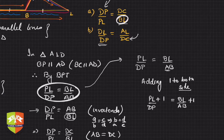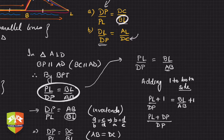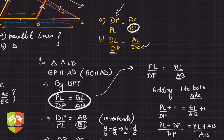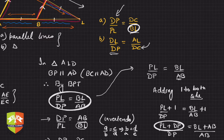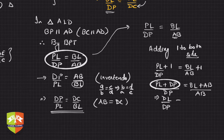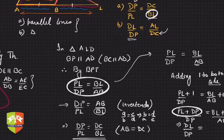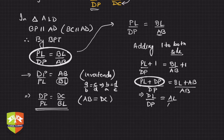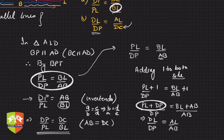Taking the common denominator on both sides: the left side becomes (PL + DP) upon DP, and the right side becomes (BL + AB) upon AB. Now PL + DP is nothing but DL, so the left side becomes DL upon DP. And BL + AB from the figure is AL, so the right side is AL upon AB.